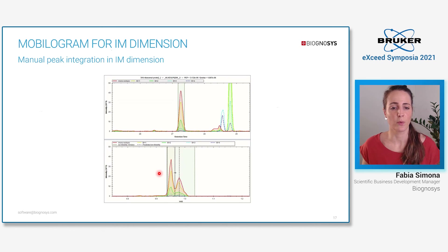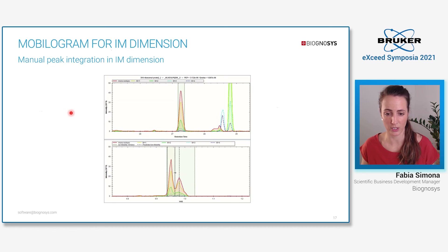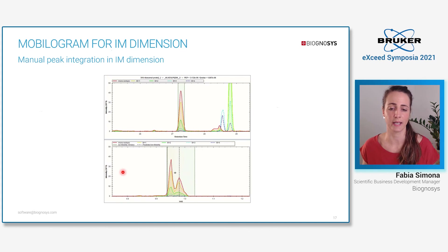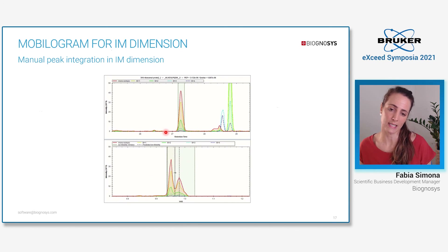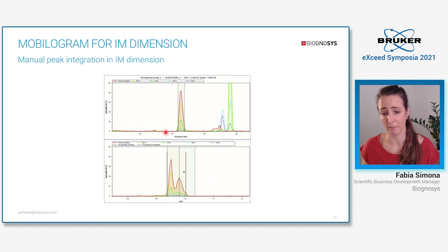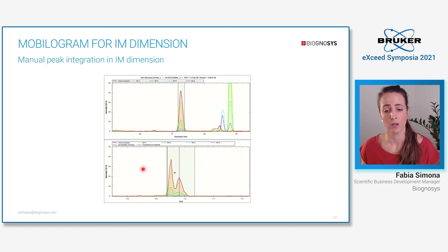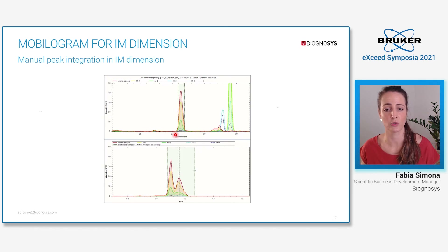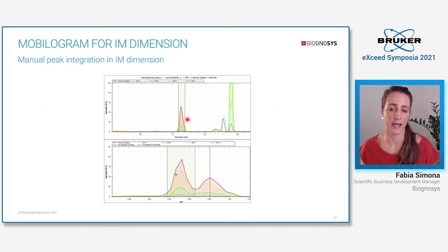The last feature I would like to talk about is the mobilogram for ion mobility. The mobilogram allows for manual peak integration in the ion mobility dimension. By reintegrating a peak in ion mobility, you will automatically change the retention time XIC as well, because the retention time XIC is built from what is contained within the extraction window in ion mobility. So in this case, where we have two peaks and we decide to pick only the first one, we readjust the extraction boundaries and automatically see how the quantification changes in the retention time XIC.